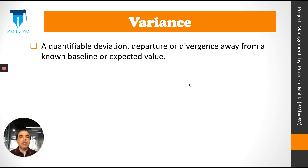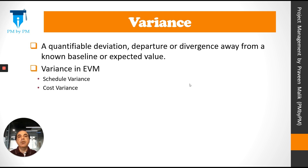The project status can be measured using two different terms: variance and efficiency. Let's first talk about variance. Variance is a quantifiable deviation, departure, or divergence away from a known baseline or expected value. In EVM we measure two things: schedule variance and cost variance.